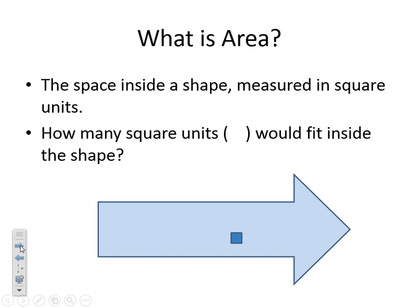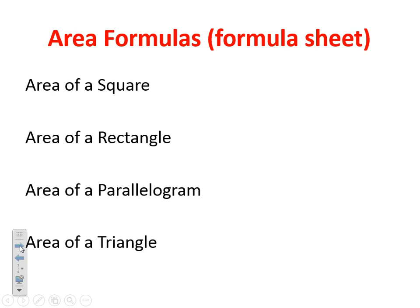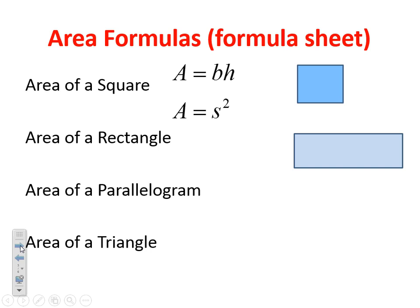Now we're going to make sure we have that formula sheet out, because all this is going to go into our formula sheet. Our first one is area of a square. All we're going to do is take our base times our height, or if you like, sides squared — you can do that too, because all of our sides are the same length. So you can use either one of these to find your area for a square.